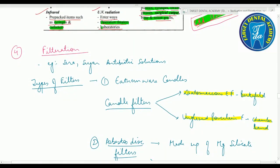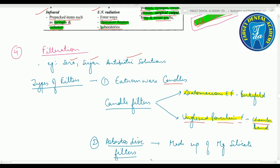Last physical method is filtration, used to sterilize syrups, sugars, and antibiotic solutions. Types of filters: earthenware candles — which include diatomaceous earth filters (example: Berkefeld) and unglazed porcelain filters (example: Chamberland).